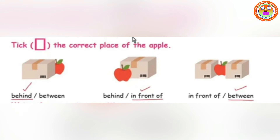See the second picture. Where is the apple? Behind or in front of? Yes, the apple is in front of the box. And see the third picture. Where is the apple? Yes, the apple is between the boxes.